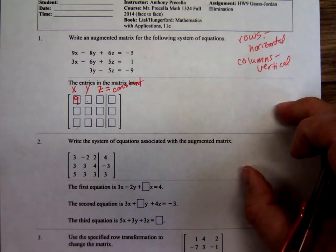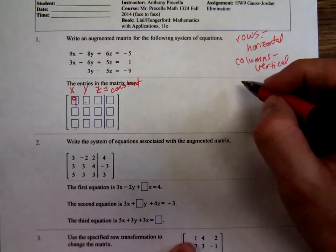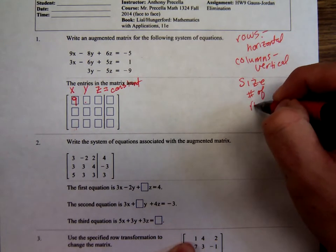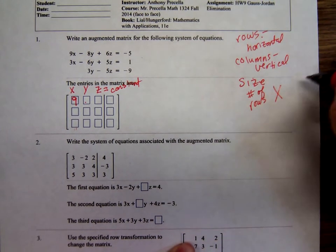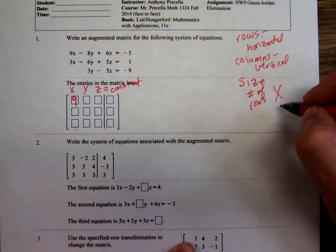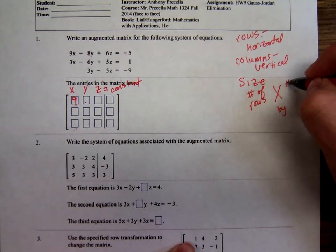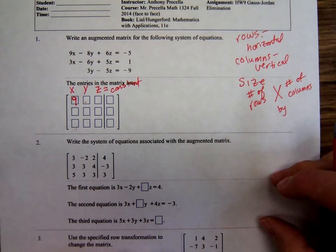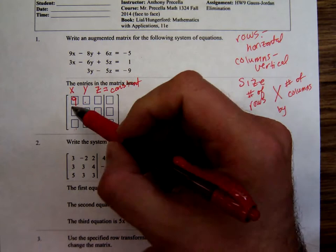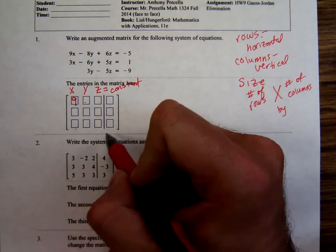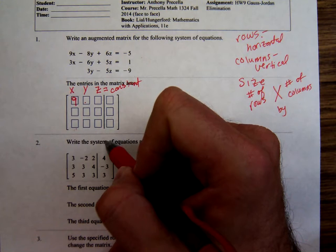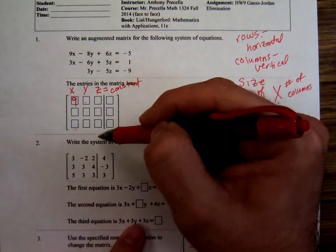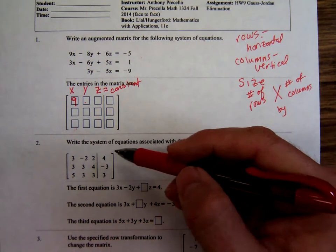In college algebra, we say the size of a matrix is the number of rows by number of columns. That x is read as by. Number of rows by number of columns. So, this augmented matrix has three rows, four columns. So this is a three by four matrix.